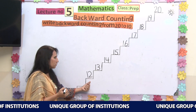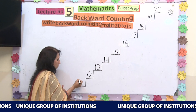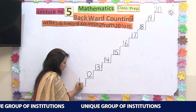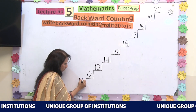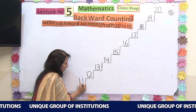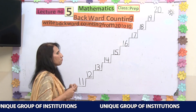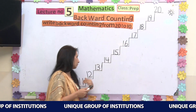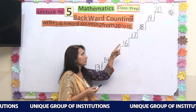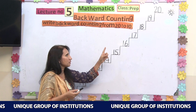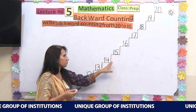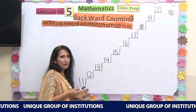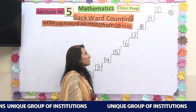Before number 12, what do we have? We have number 11 — written as 1 and 1. So this is your backward counting from 20 till 11: 20, 19, 18, 17, 16, 15, 14, 13, 12, and 11.